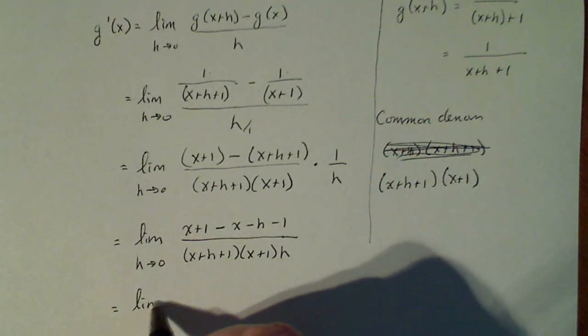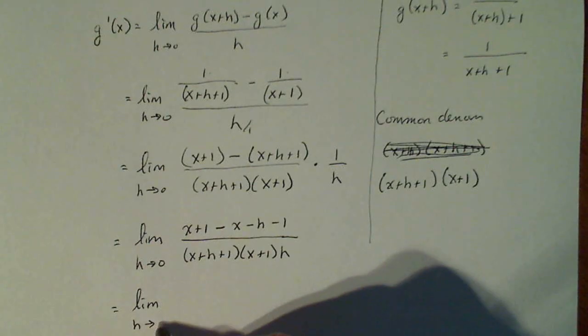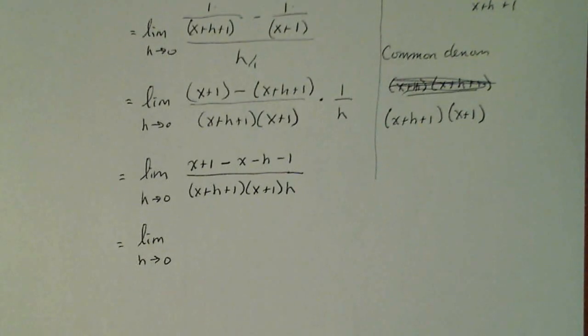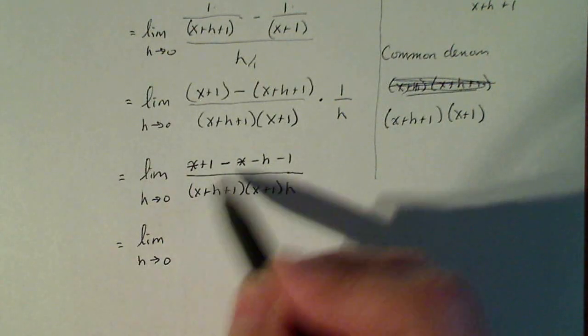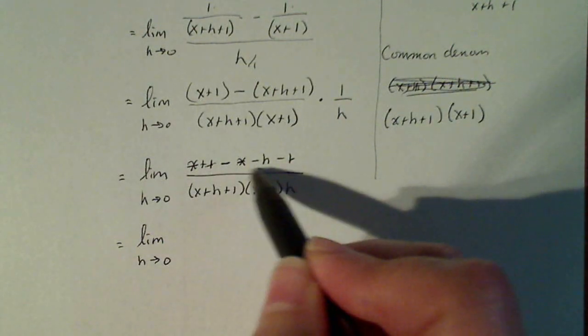Continue to simplify the numerator, because I'm not multiplying out the denominator. Don't do it. So in the numerator, the x's go away, and the ones go away, and I'm left with -h.